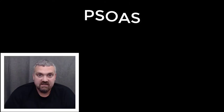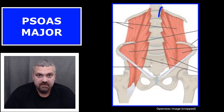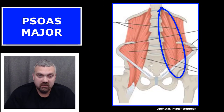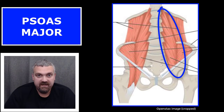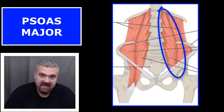Next, we have psoas. Psoas means of the loins. This is going to be a loin muscle that connects your low back to your hip and pelvis. The psoas major would be the key example here.